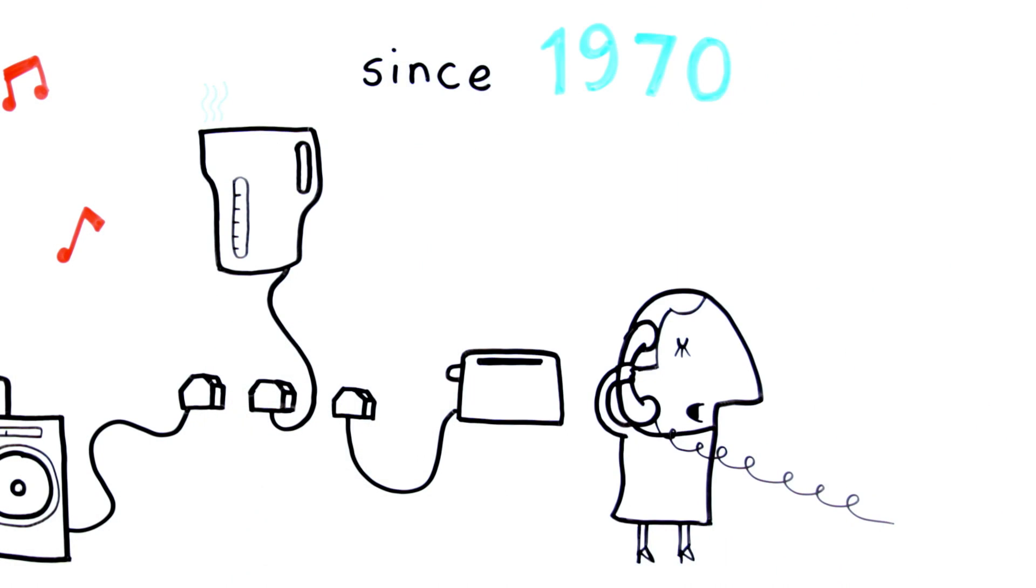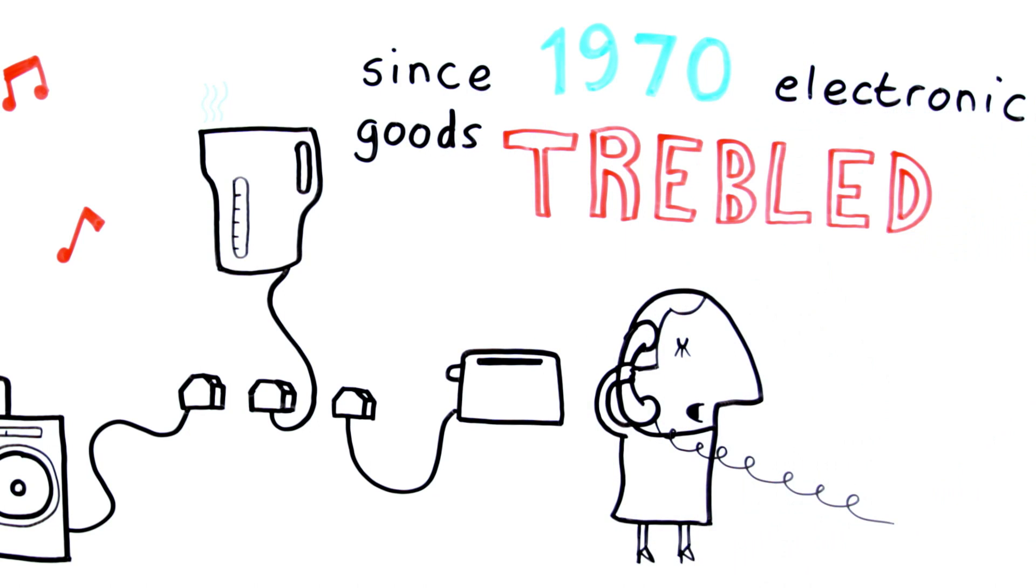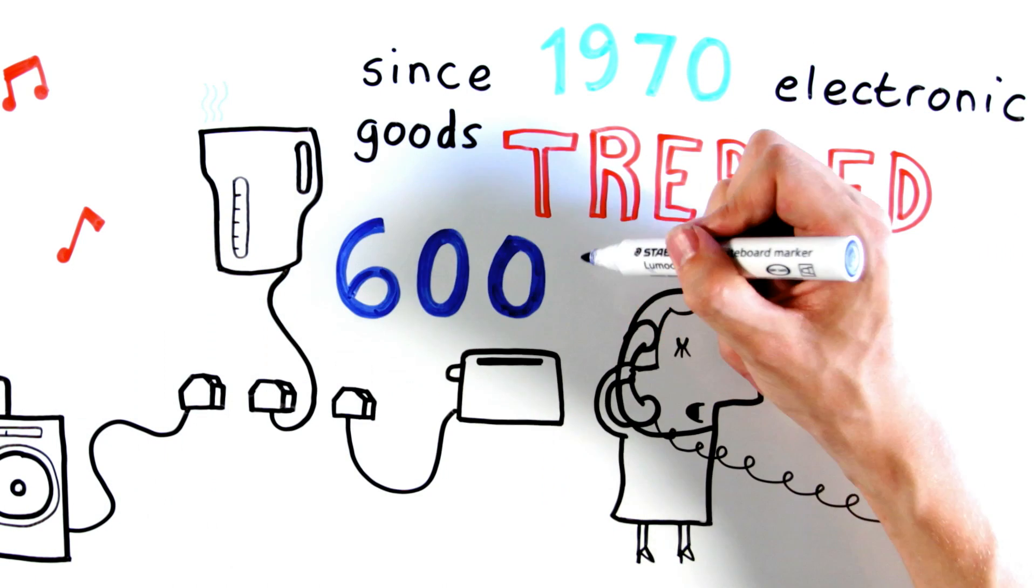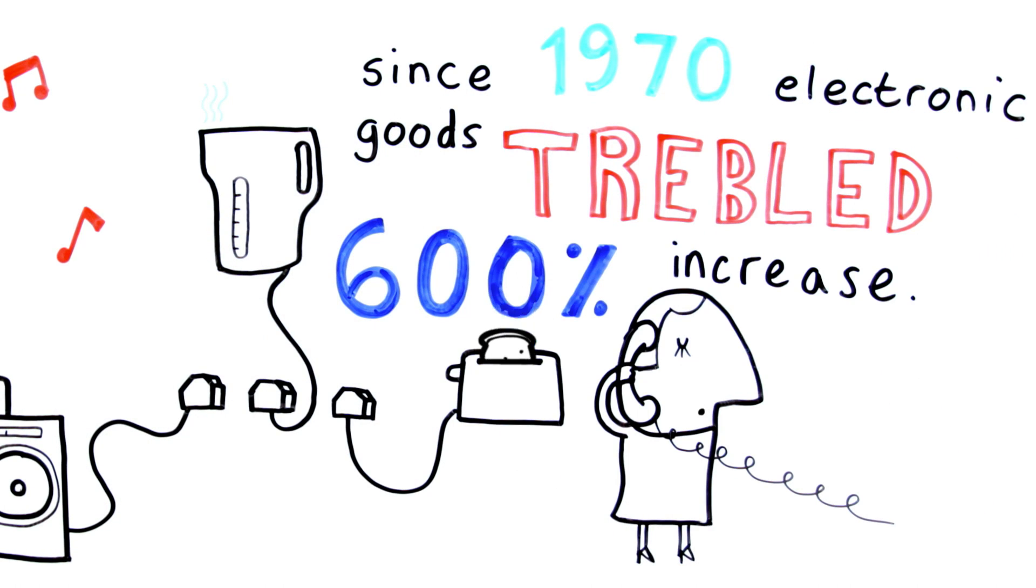Since 1970, the number of electronic goods in the average UK household has trebled, contributing to a 600% increase in energy consumption. And charging mobile phones is just the tip of the iceberg.